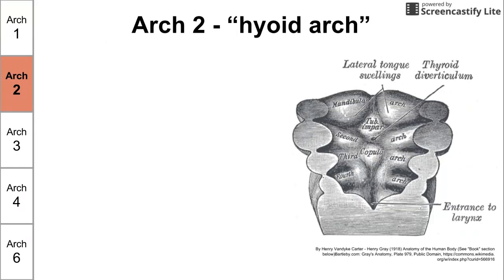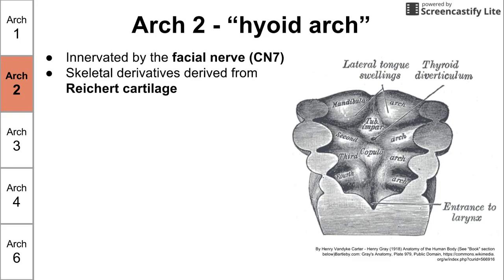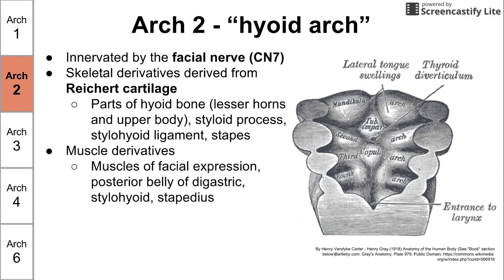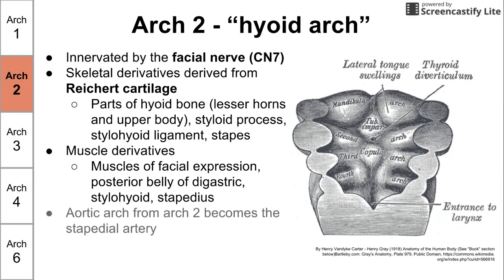Now let's talk about arch two, also called the hyoid arch. This is innervated by the facial nerve, which is cranial nerve seven. Skeletal derivatives of arch two come from Reichert's cartilage and include parts of the hyoid bone, the styloid process, the stylohyoid ligament, and the stapes — the third small bone in the ear. Muscle derivatives include the muscles of facial expression, the posterior belly of the digastric, the stylohyoid, and the stapedius. Aortic arch two becomes the stapedial artery in the fully developed human.